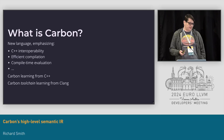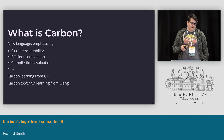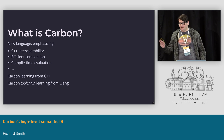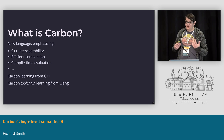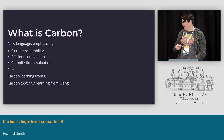Carbon is a new programming language which has an emphasis on C++ interoperability, really efficient compilation, compile-time evaluation, and a bunch of other things. In the design of Carbon, we are trying to learn from C++, and in the design of the Carbon toolchain, we are trying to learn from other toolchains, in particular Clang.